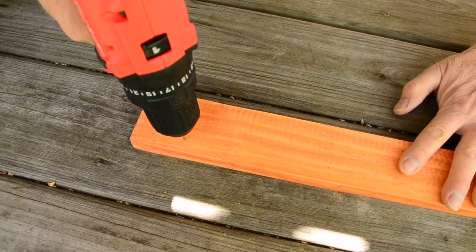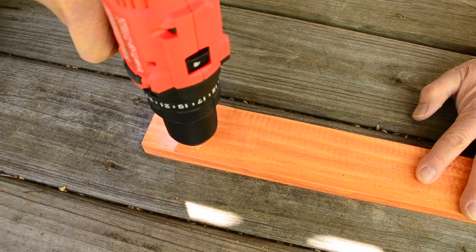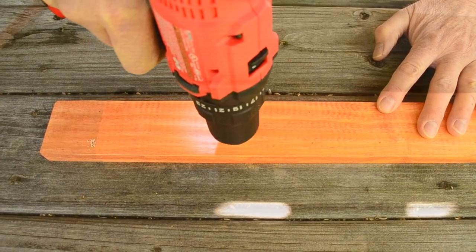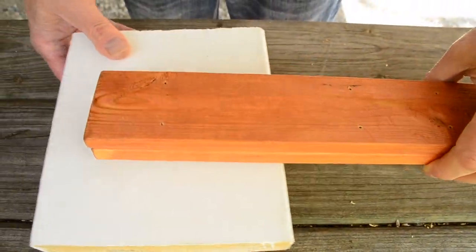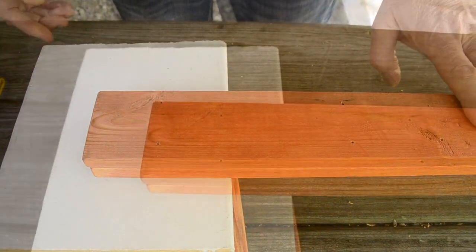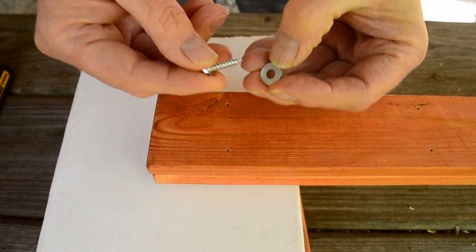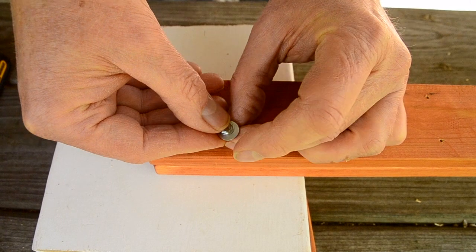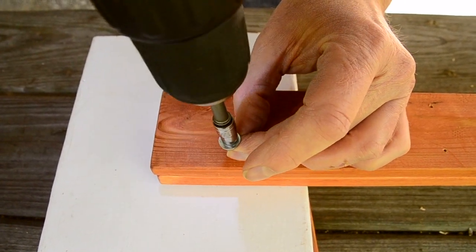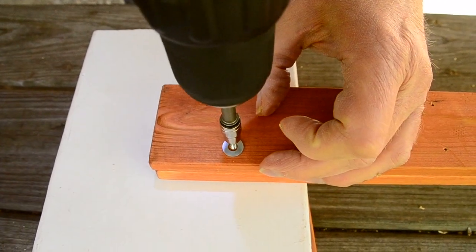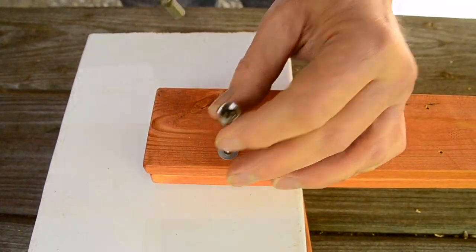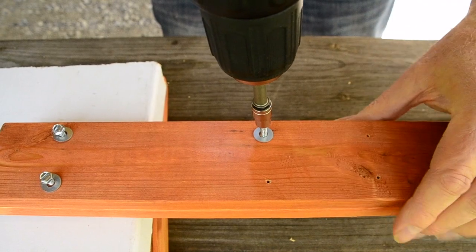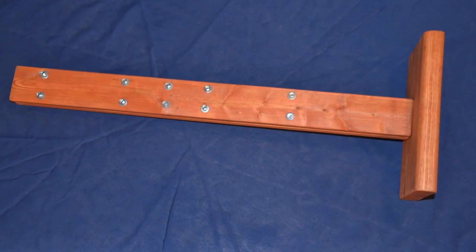Drill a pilot hole at each mark with a sixteenth of an inch bit. Since I have my base attached I am using a couple of wood blocks to keep it level. Screw a sheet metal screw and washer about half way into each pilot hole. It should look like this when you are done.